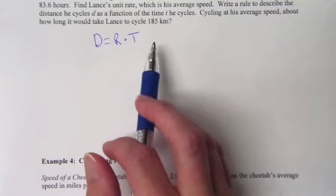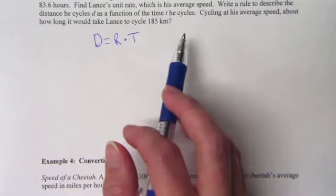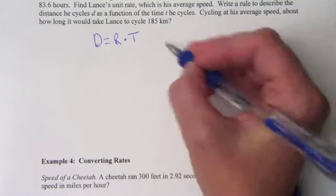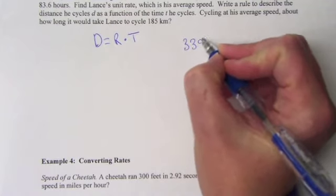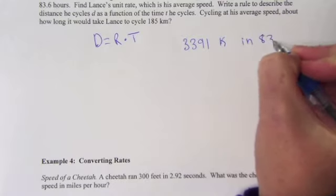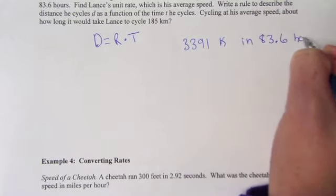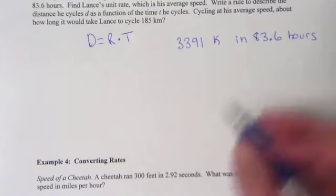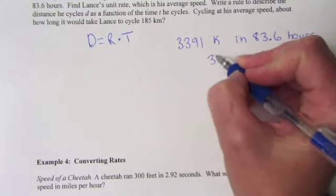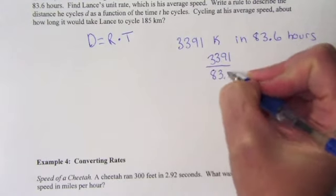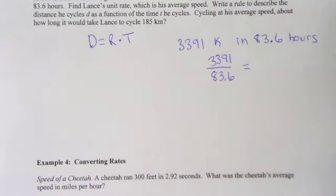And then we need to find his average speed is what we need to do. He completed 3,391 kilometers in 83.6 hours. We want to know how many kilometers per one hour did he do, because that's going to be our average time. So what we're going to do is we're just going to divide 3,391 divided by 83.6. And that will give us how many kilometers he cycles in one hour.